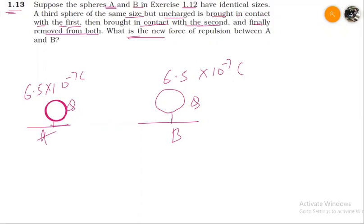So now third, uncharged body. Suppose this is C, which is an uncharged body. What we have to do? We have to contact this with this. After a while, C has contacted with this. So what happens?